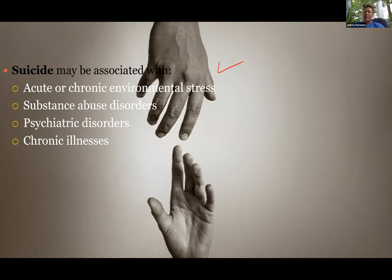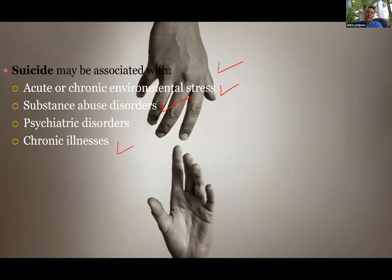Suicide is one of the highest causes of violent death in the world. It can be brought on by many things, and sometimes there's no note and no warning signs. You should take people seriously and make sure help is available. People with chronic illnesses involving pain can reach a point of not wanting to keep living with it. Substance abuse goes strongly with suicide — feelings of worthlessness and failure can cause suicidal thoughts.